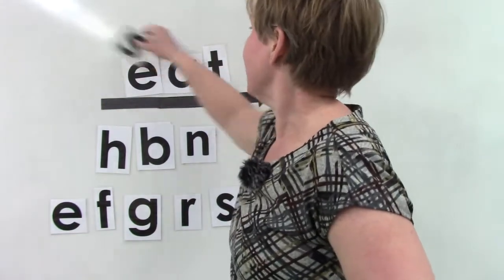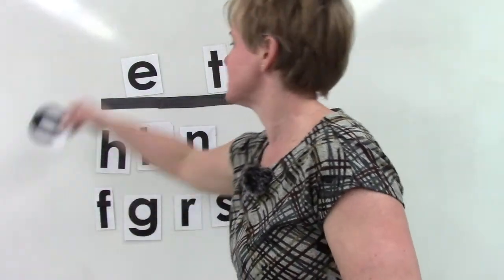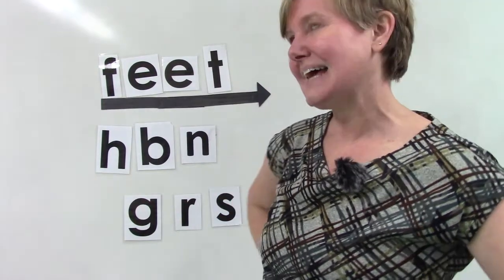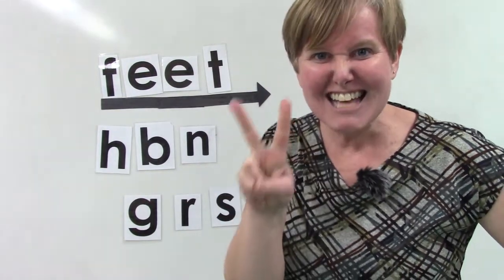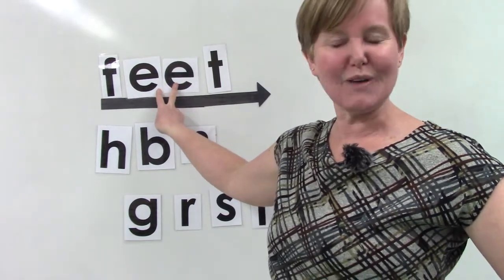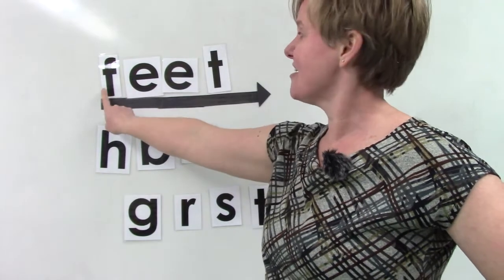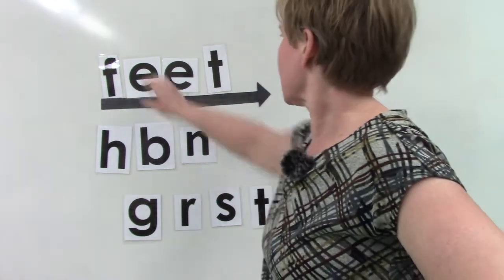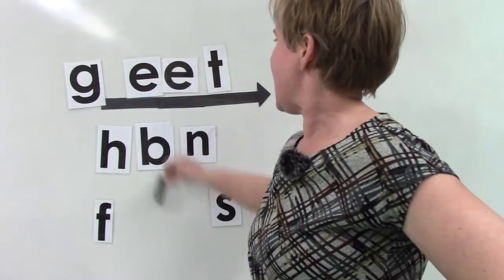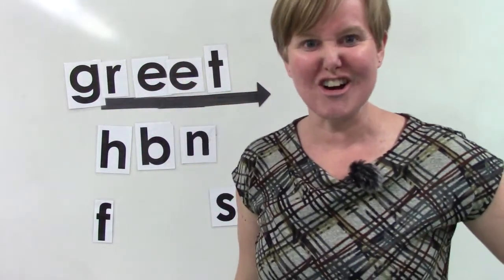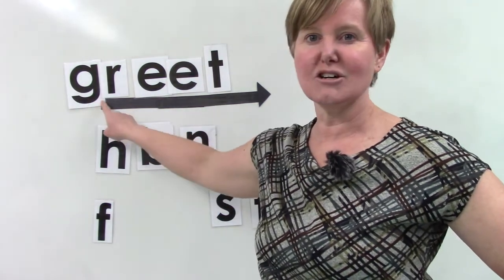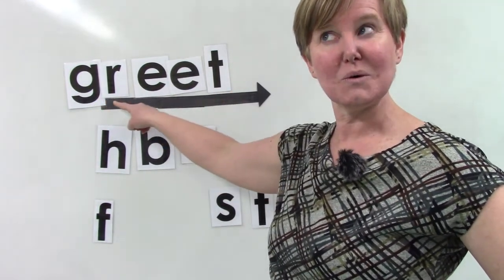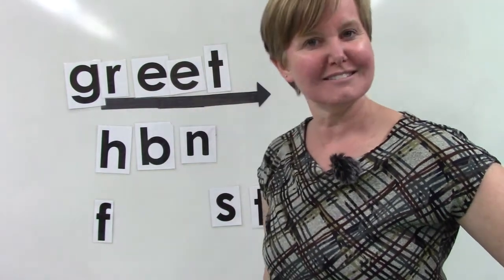Now I am going to swap out the a for an e. Look at this word. How many vowels do you see? Two. When two vowels go walking, the first one does the talking. F-e-t, feet. Good job. We are going to swap out the f for a g and an r. I want you to say the sounds with me. G-r-e-t, g-r-e-t. What's the word? Greet. Excellent reading.